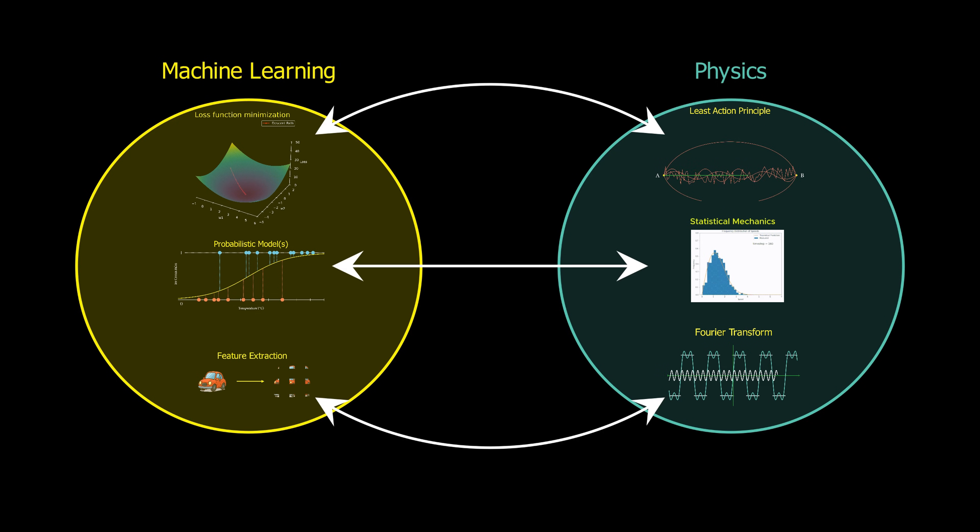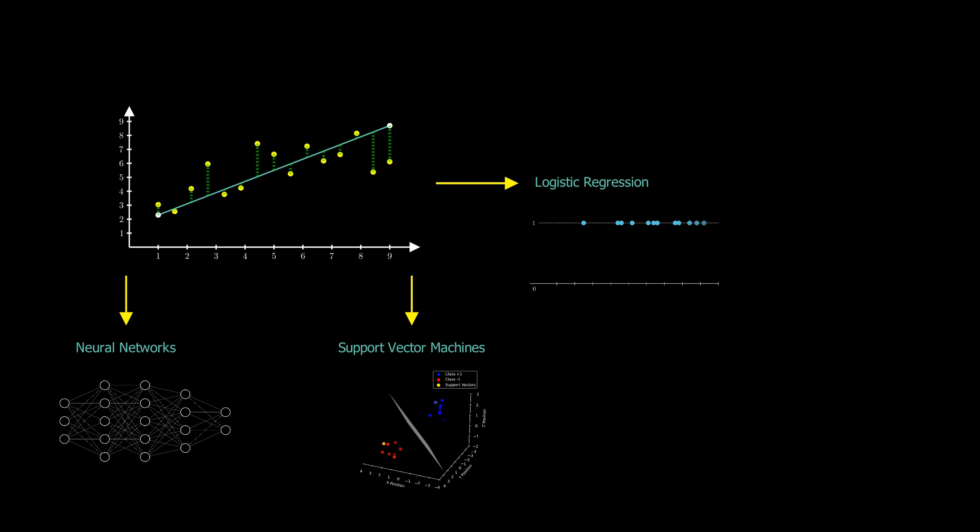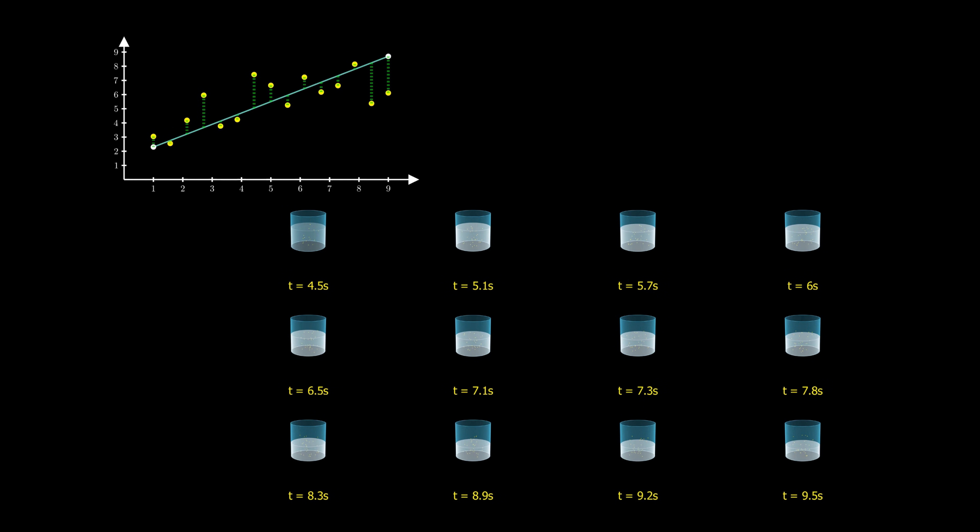Take linear regression, for example. It's one of the simplest supervised learning models, but also one of the most foundational. What if I told you it can actually be derived from first principles in physics, specifically from the same logic that gives rise to the canonical ensemble in statistical mechanics? In this video, we're going to derive linear regression using ideas that physicists are already deeply familiar with.